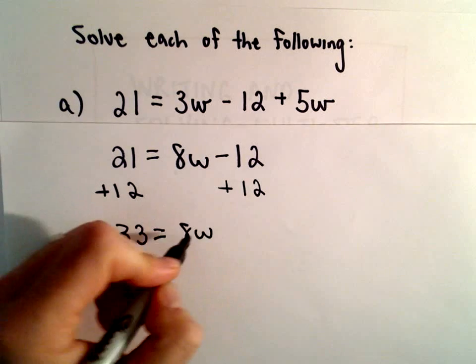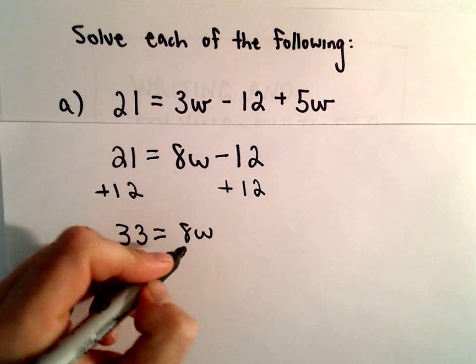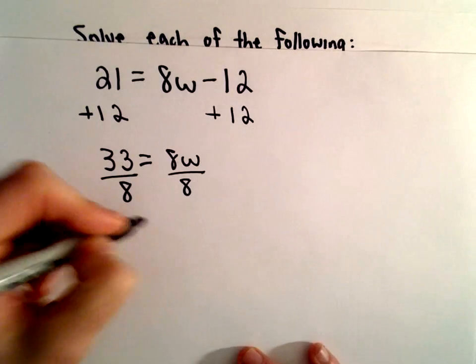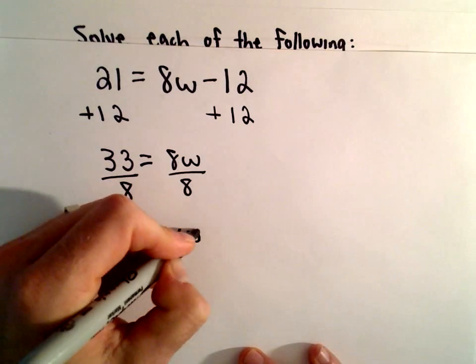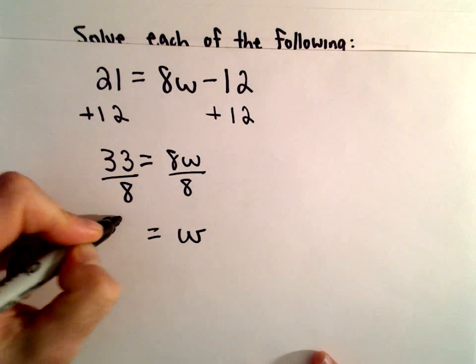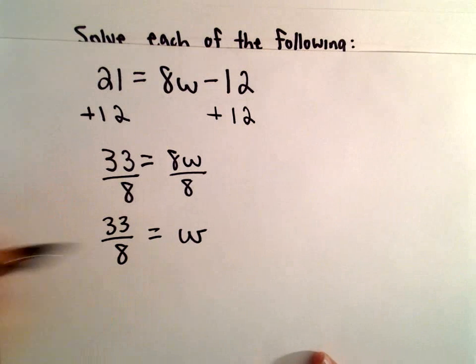And again to solve for W since we're multiplying by 8 I'm going to divide both sides by 8. So on the left side we're left with 1W. 33 divided by 8, you know that doesn't reduce as a fraction. You can always turn it into a decimal or a mixed number but I'm going to leave it right there.